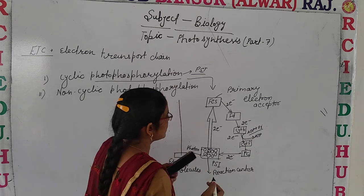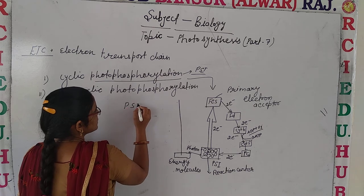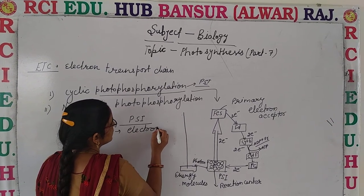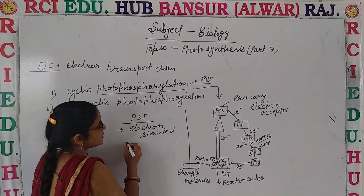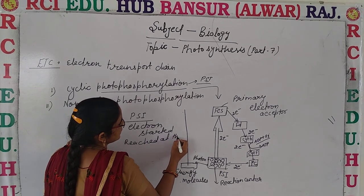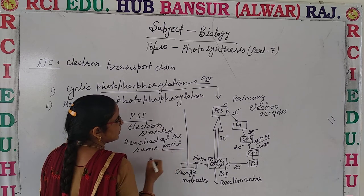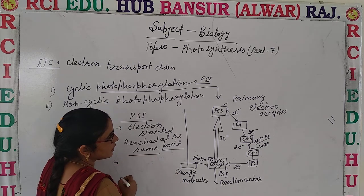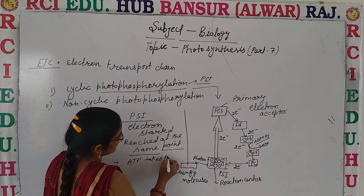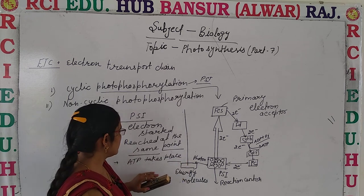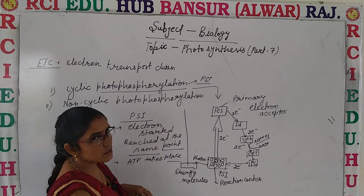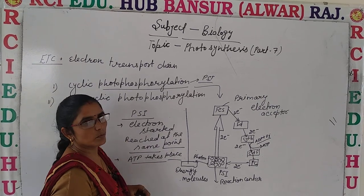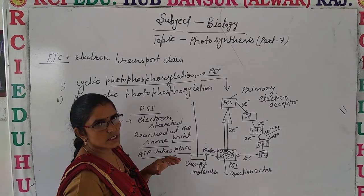This is all about cyclic photophosphorylation. The main points are: in cyclic photophosphorylation, only photosystem 1 takes part. Electrons are released from PS1 and return back to PS1 — they start and end at the same point. Also, in cyclic photophosphorylation, only the formation of ATP takes place. I am emphasizing this so that when we discuss non-cyclic photophosphorylation, you can understand the differences.